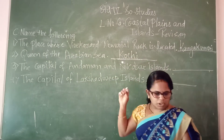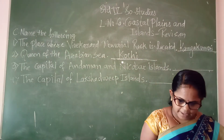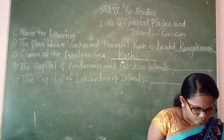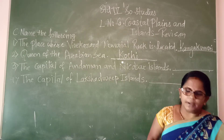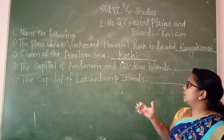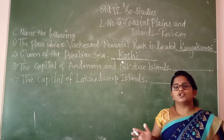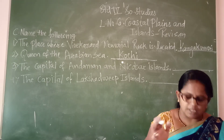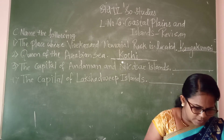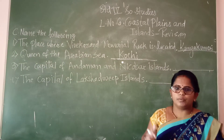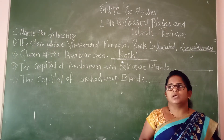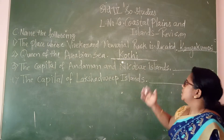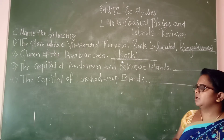What is the spelling of Kochi? K-O-C-H-I. Why is Kochi called the queen of the Arabian Sea? Because of its coastal sea ports — which are the most important ports for ships and fishing — which is why it is called the queen of the Arabian Sea.